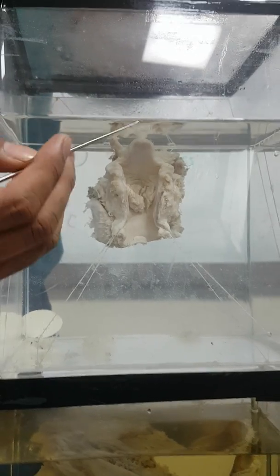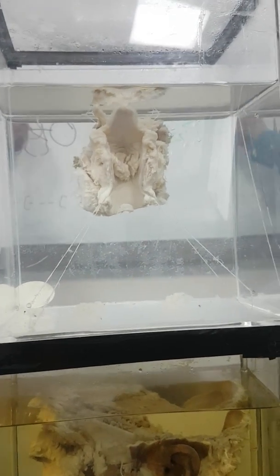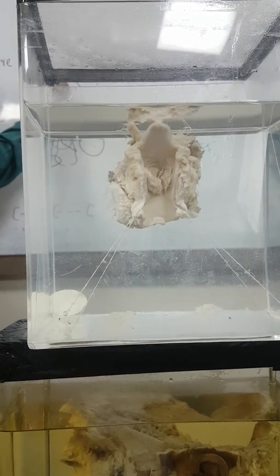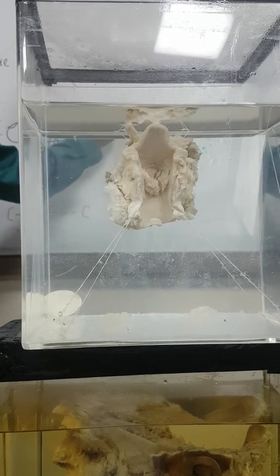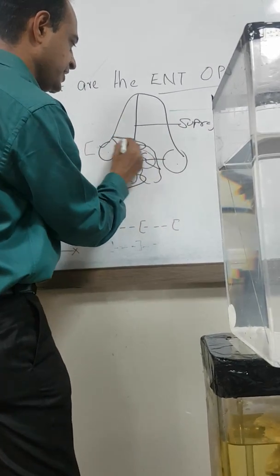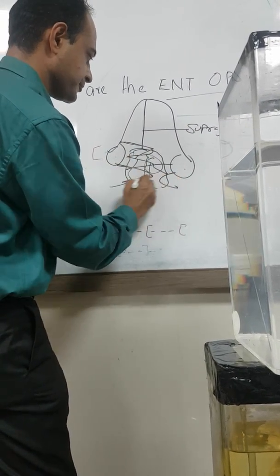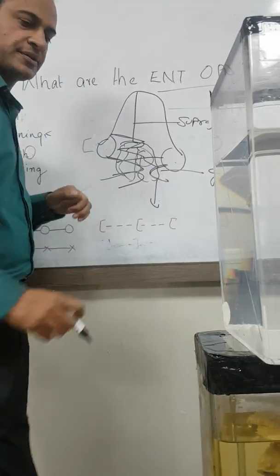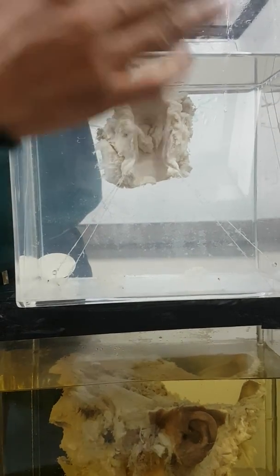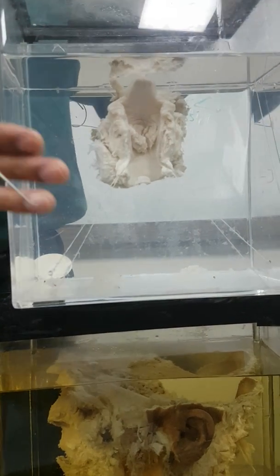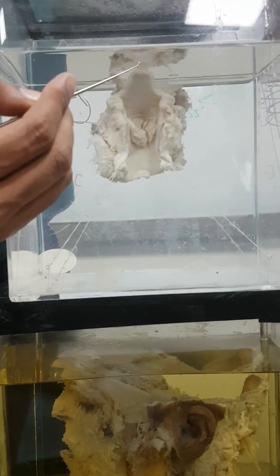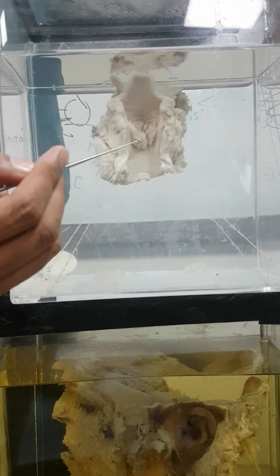From the epiglottis, you cannot clearly see here, but there will be a false cord and a true cord. From the epiglottis to the false cord, this is the supraglottis. Between the two true cords is the glottis, and below this is the subglottis. So: supraglottis, glottis, and subglottis.